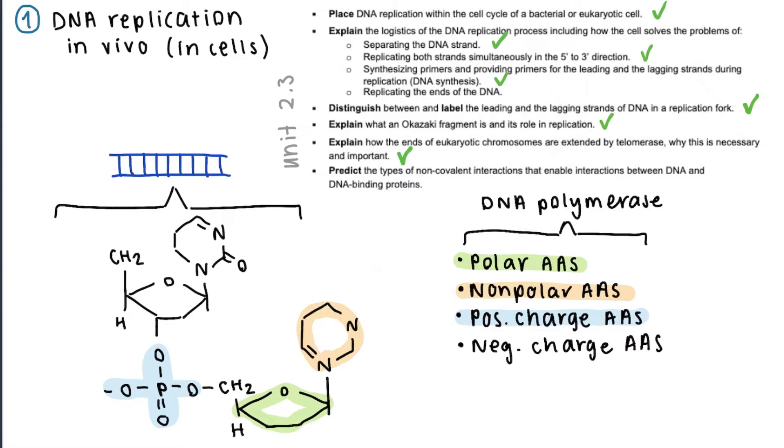However, there can also be different mixes of these bonds. So for example, between the sugar in the nucleotide and a non-polar amino acid in DNA polymerase, you could form a PD-ID bond.